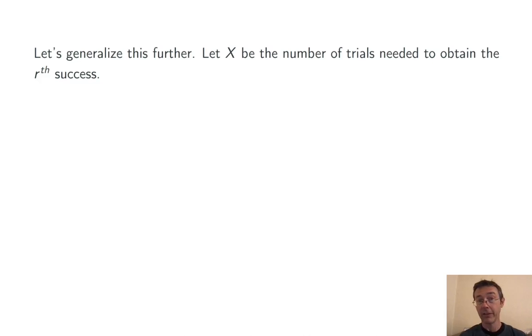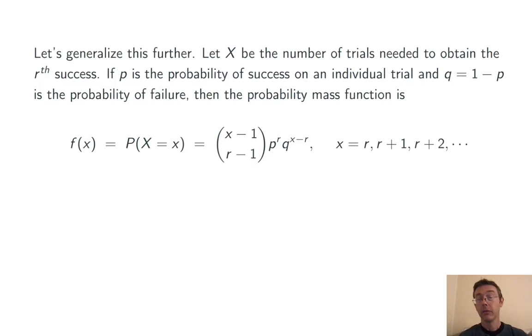Let's generalize this further. Let x be the number of trials needed to obtain r successes, so not just four, but more generally r successes. Let p be the probability of success on an individual trial, and q equals 1 minus p, the probability of failure. Then the probability mass function for x is given by (x-1) choose (r-1), p to the r, q to the x minus r, where x can be r, r plus 1, and so on.